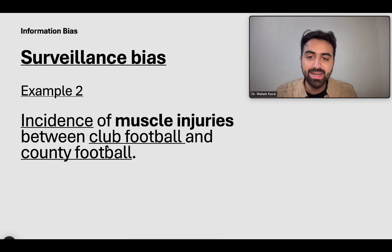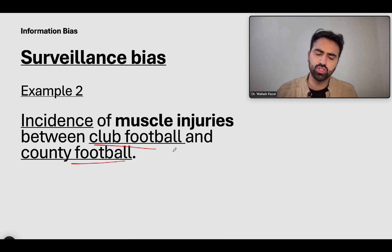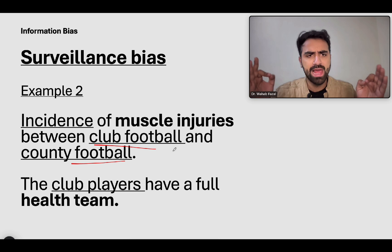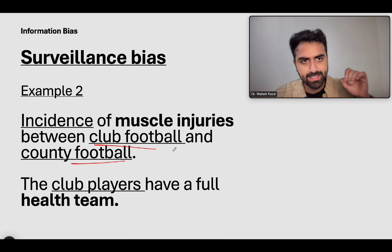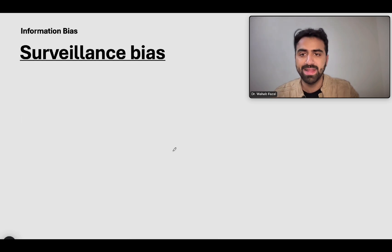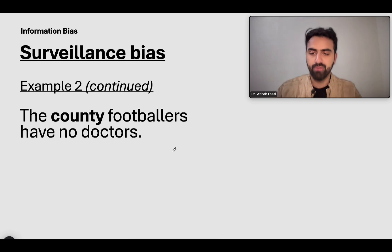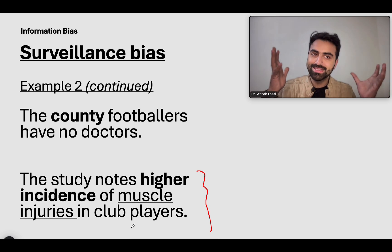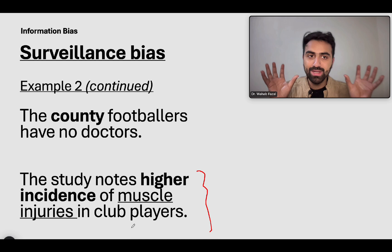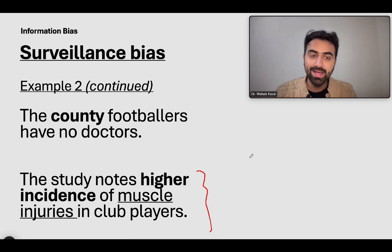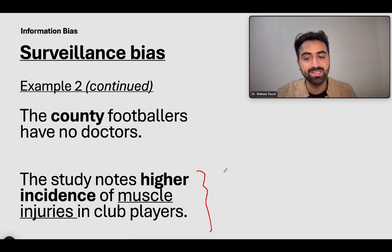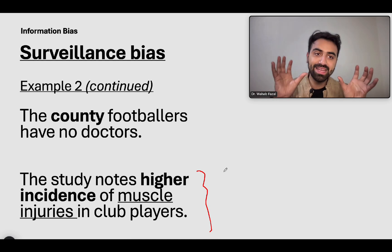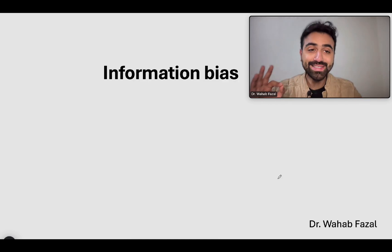Second example: incidence of muscle injuries between club football and county football. Club football has a lot of money; county football does not. Club football players have a full health team — personal coaches checking every aspect of the player's life. County footballers have no doctors and just play for fun. The study notes a much higher incidence of muscle injuries in club players, even though both groups play the same amount of football. The club players have regular health checkups, which explains the higher incidence — that is surveillance bias.